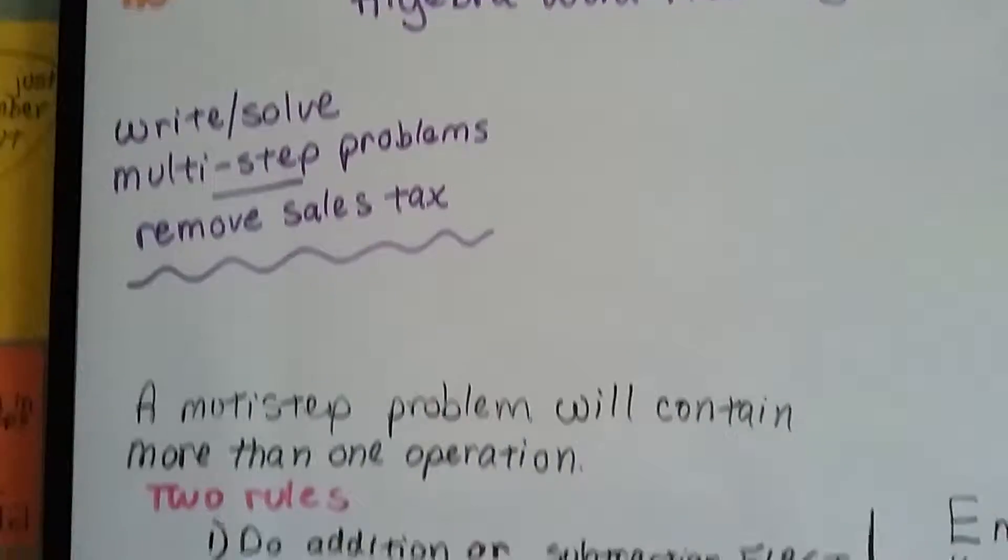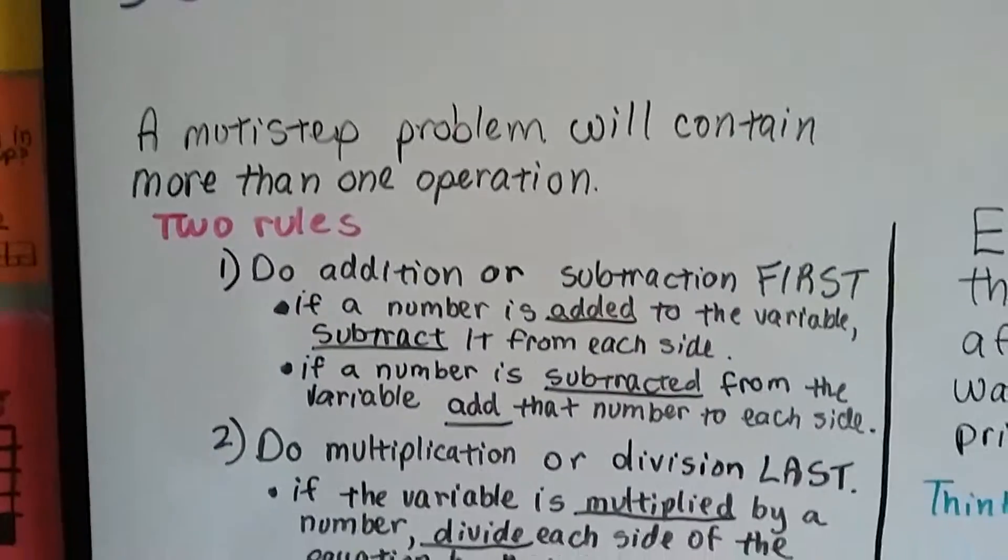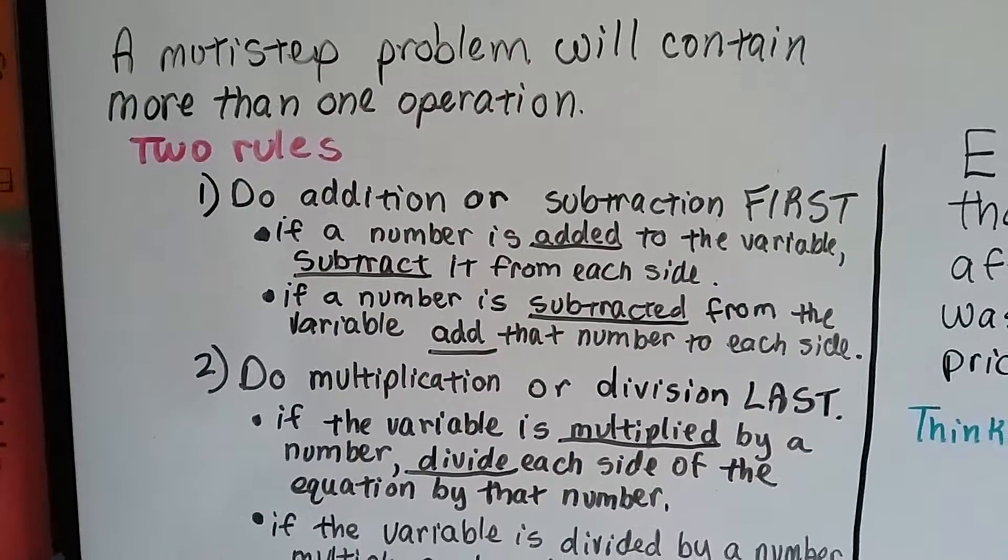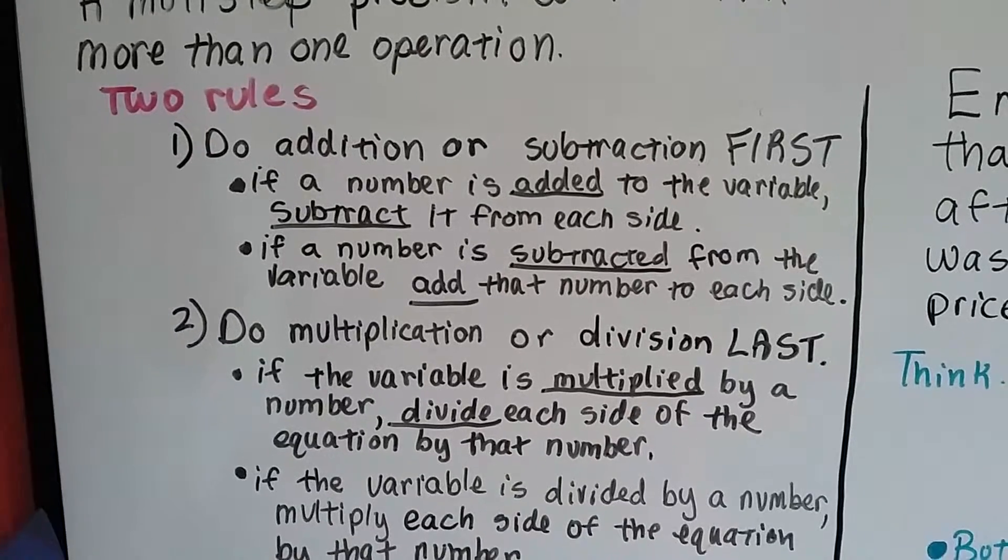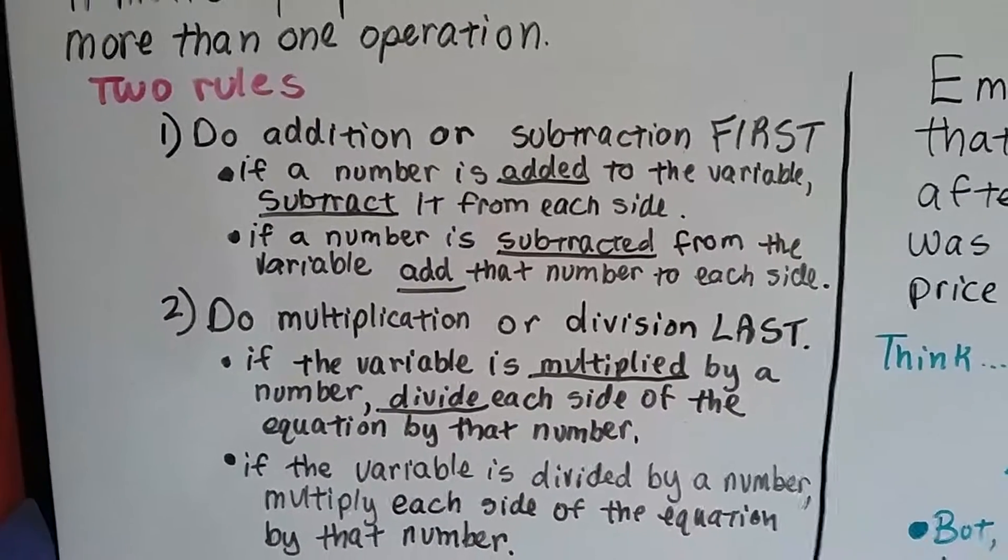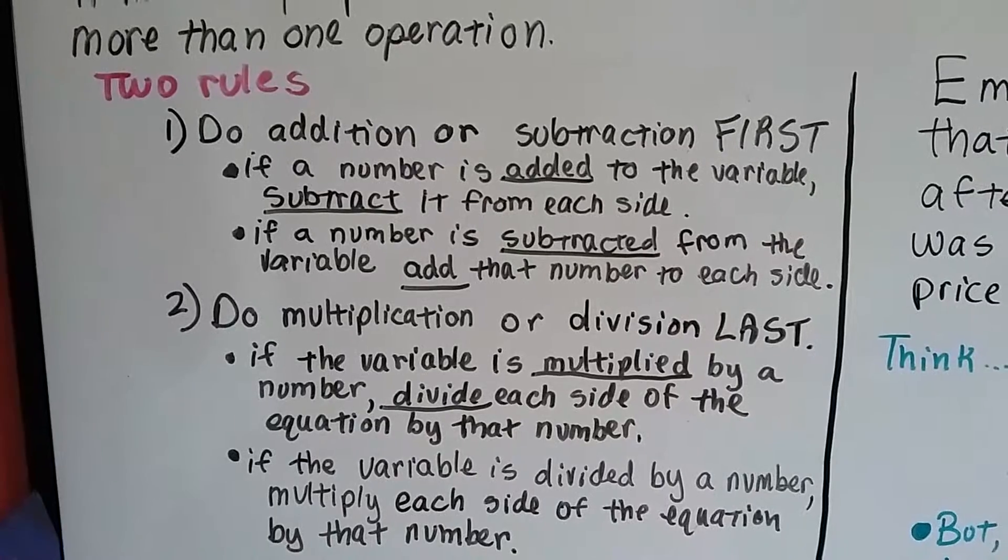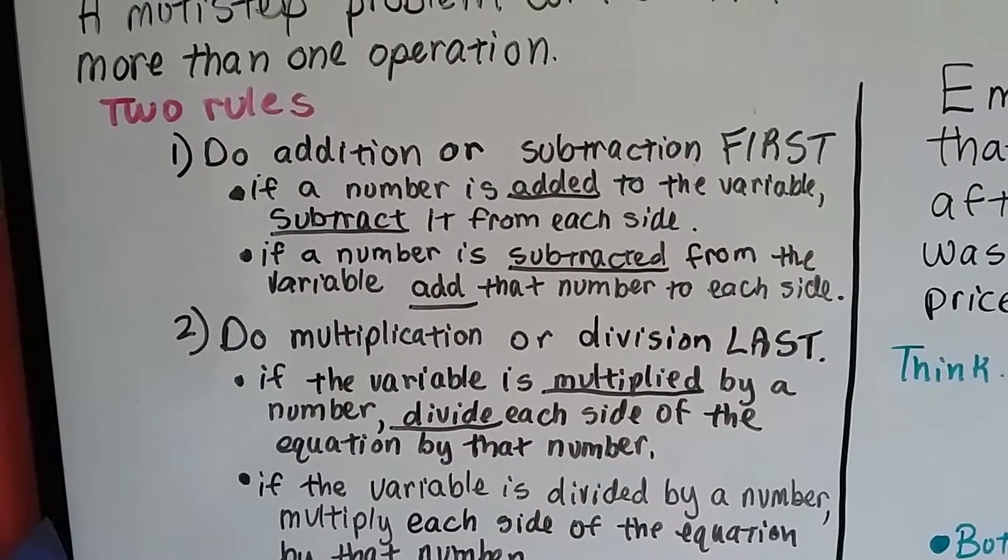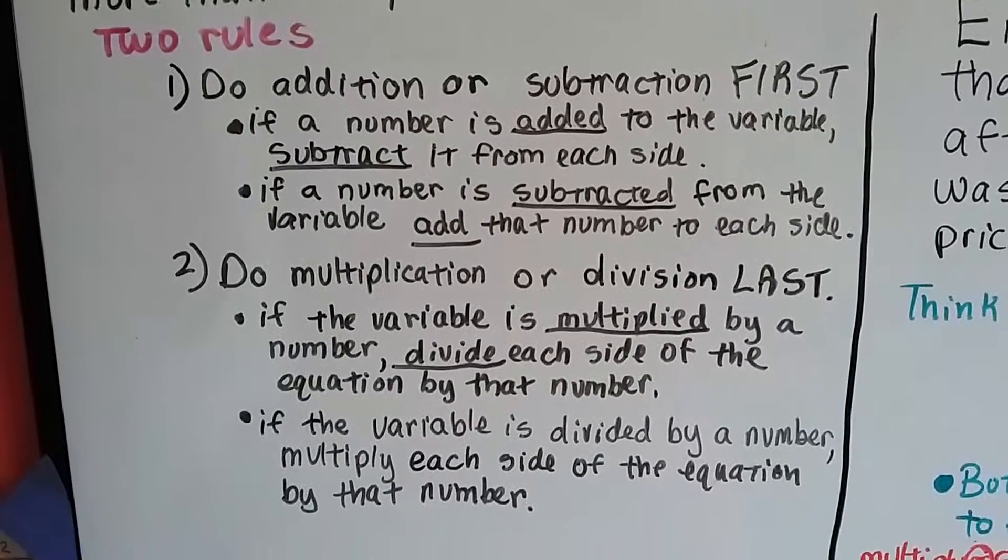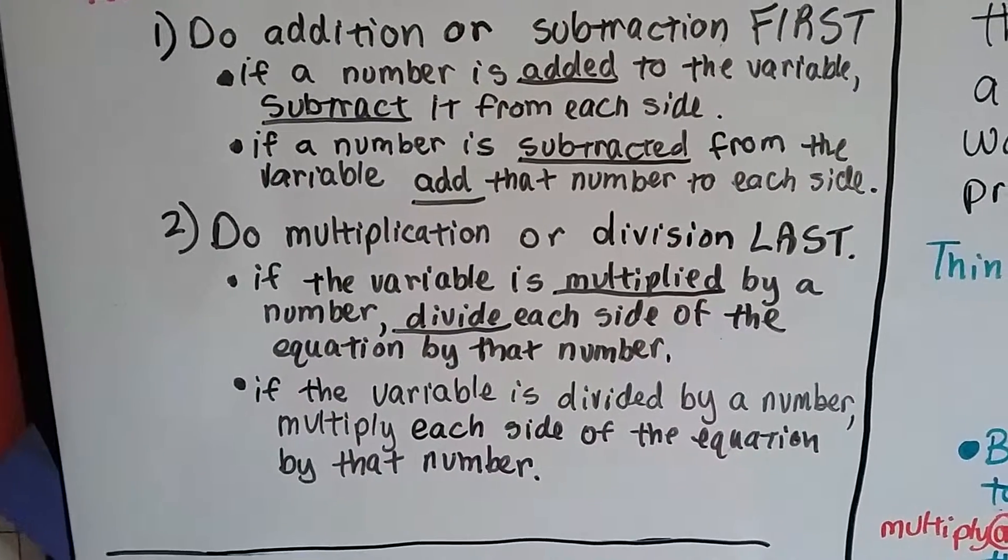We're going to remove sales tax. Remember, a multi-step problem will contain more than one operation. There's two rules. We're going to do addition or subtraction first. If a number is added or subtracted in the expression or equation, we're going to do that first. And then if there's multiplication or division, we're going to do that last.